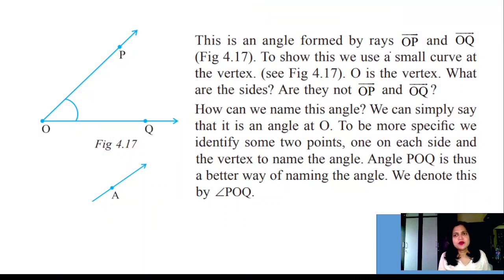This angle is formed by the rays OP and OQ. To show this, we use a small curve at the vertex. O is the vertex. What are the sides? They are OP and OQ. How can we name this angle? Can we simply say this is angle O?